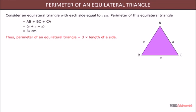Thus, perimeter of an equilateral triangle is equal to 3 into length of a side.